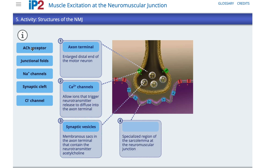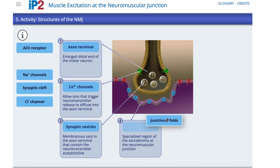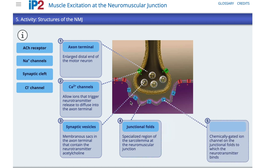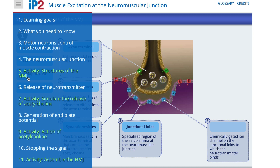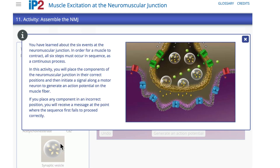That would be the junctional fold. Let's see what happens if I say synaptic cleft there — yeah, that's still wrong. Junctional fold. I'm not going to complete this; you get the idea. This is basic, and it just checks that the students have learned what they saw in the previous videos. I'm not going to do every activity, but I am going to do two more. We're going to do Activity 11, which is assembling the neuromuscular junction. This is a little more robust.